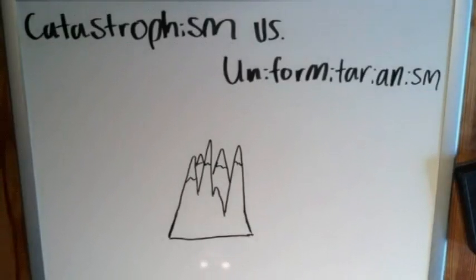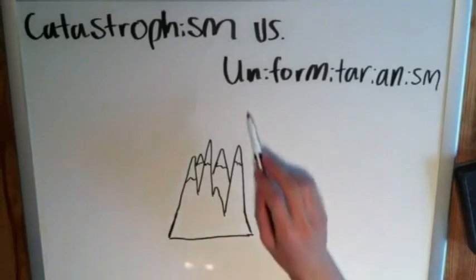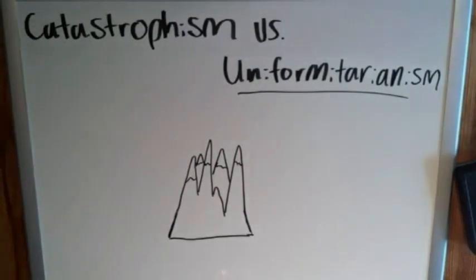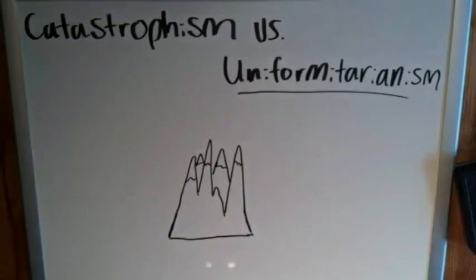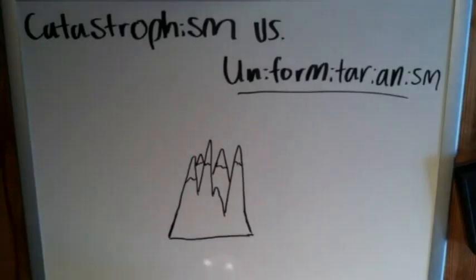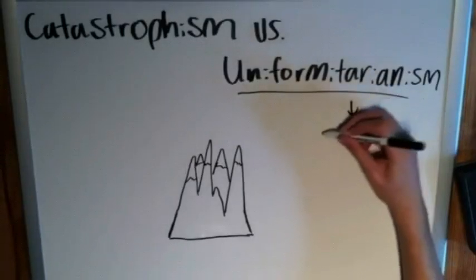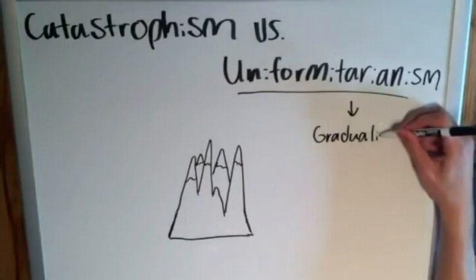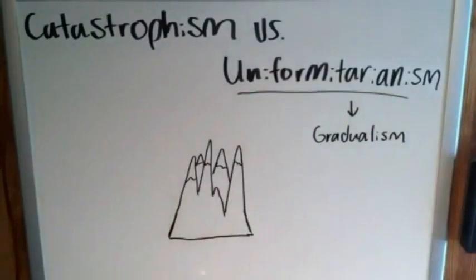Uniformitarianism would say that gradual erosion occurred — chemical and physical weathering, some rain, some wind — and sediments were broken off over a very long period of time, resulting in the formation of this mountain range. That's what uniformitarianism states, and for that same reason it's sometimes called gradualism, coming from the word gradual, meaning very slow change.